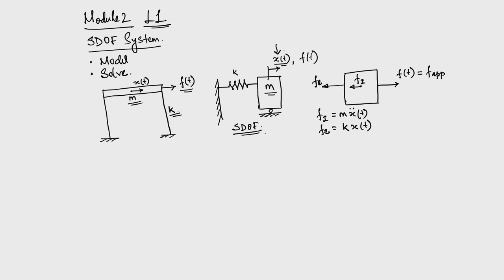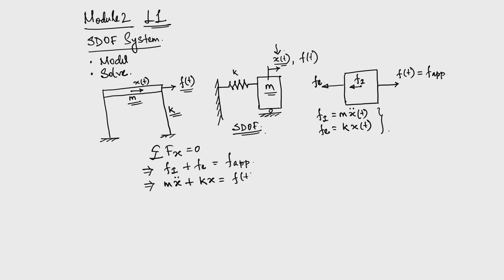Once we identify all component forces, we apply equilibrium: the sum of all forces in the horizontal direction equals zero because the system is in dynamic equilibrium. We identify inertia force plus elastic force equals applied force. The inertia force is mass times acceleration - differentiating x(t) twice gives acceleration. The elastic force is stiffness k times deformation x(t). Substituting gives m·ẍ + k·x = f(t), which is the equation of motion for an SDOF system.